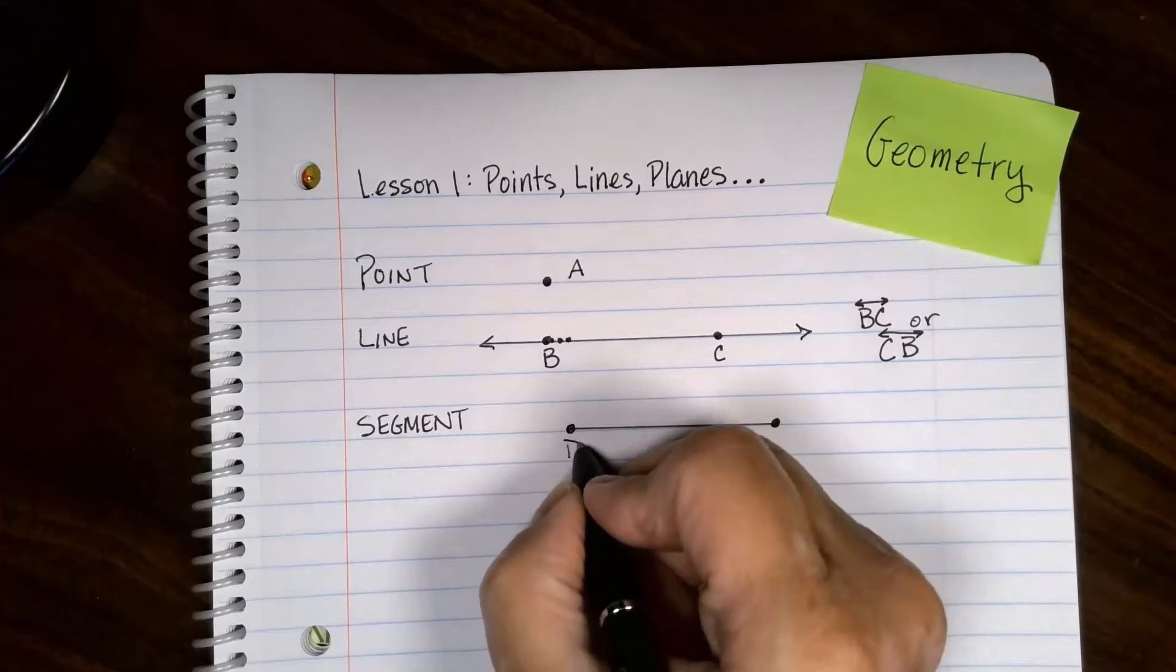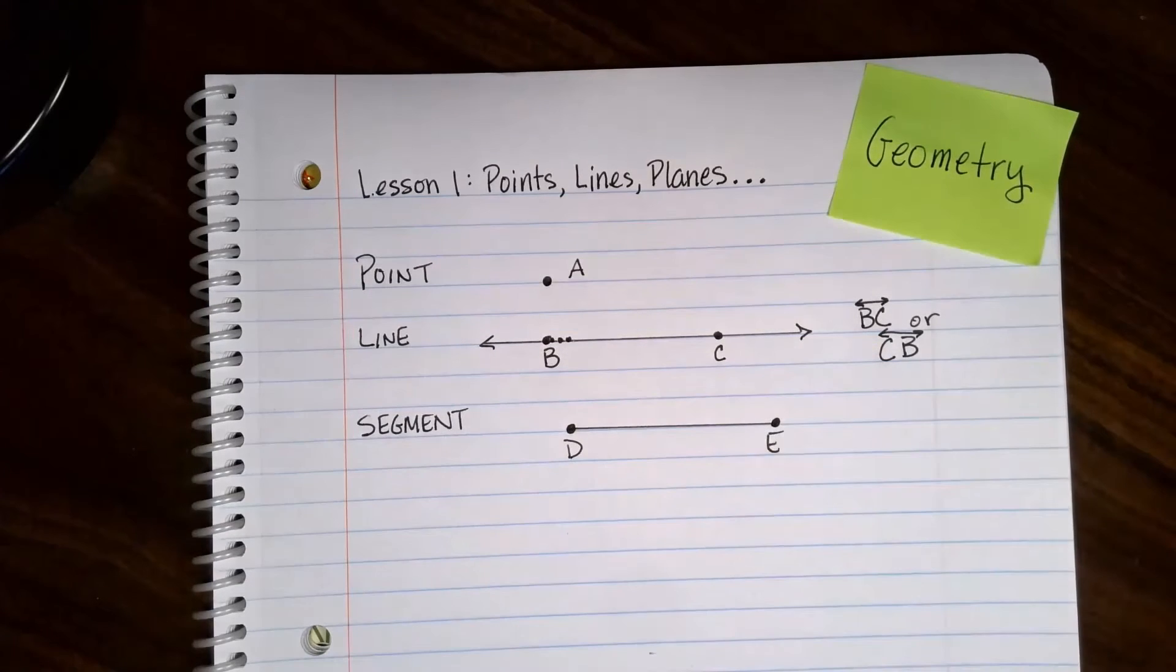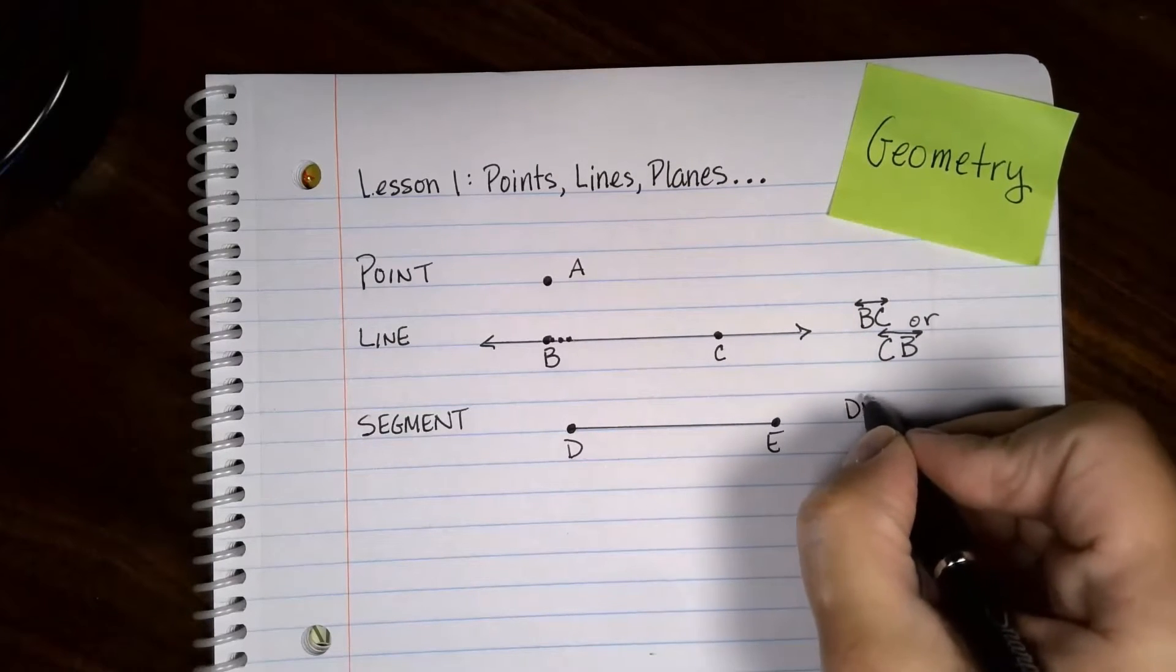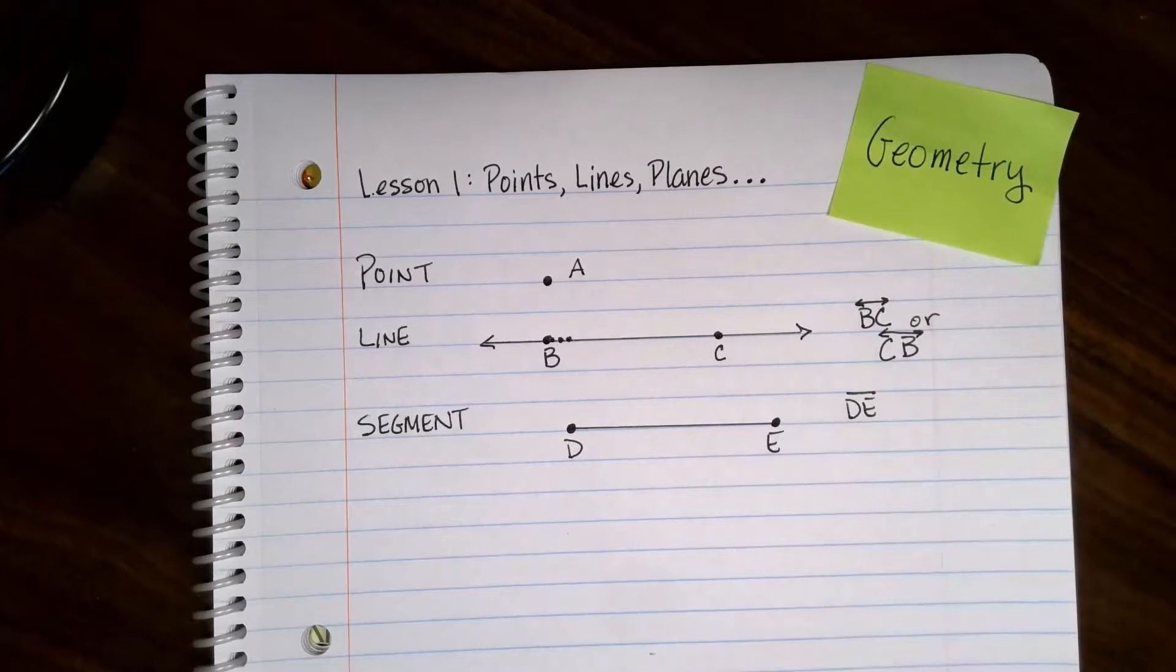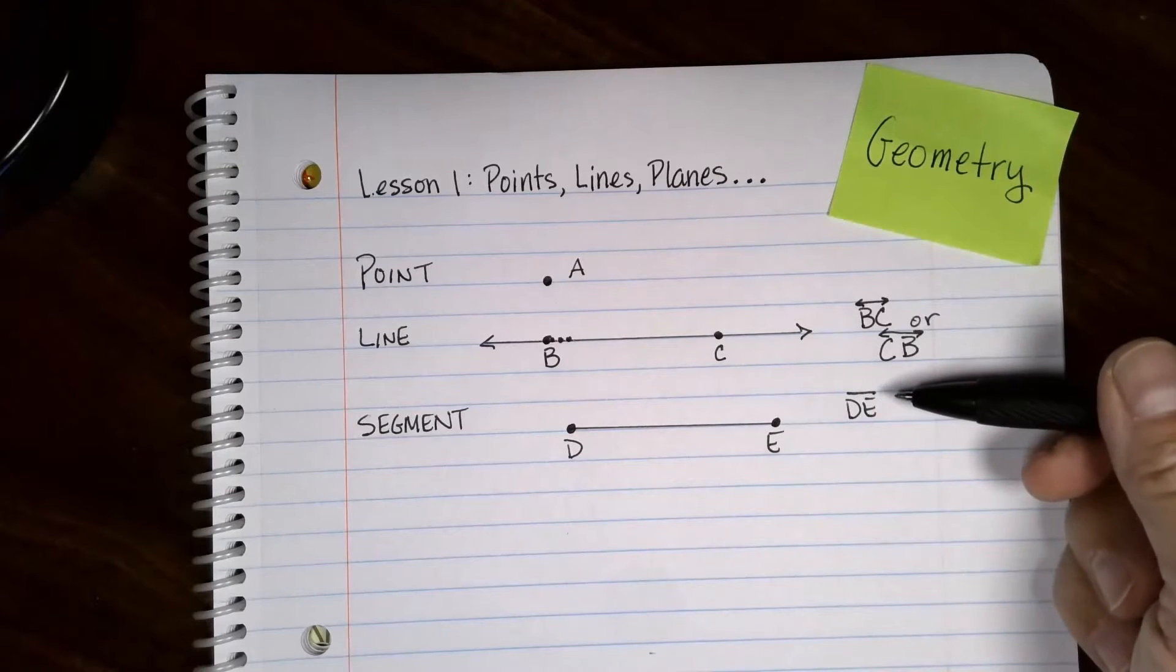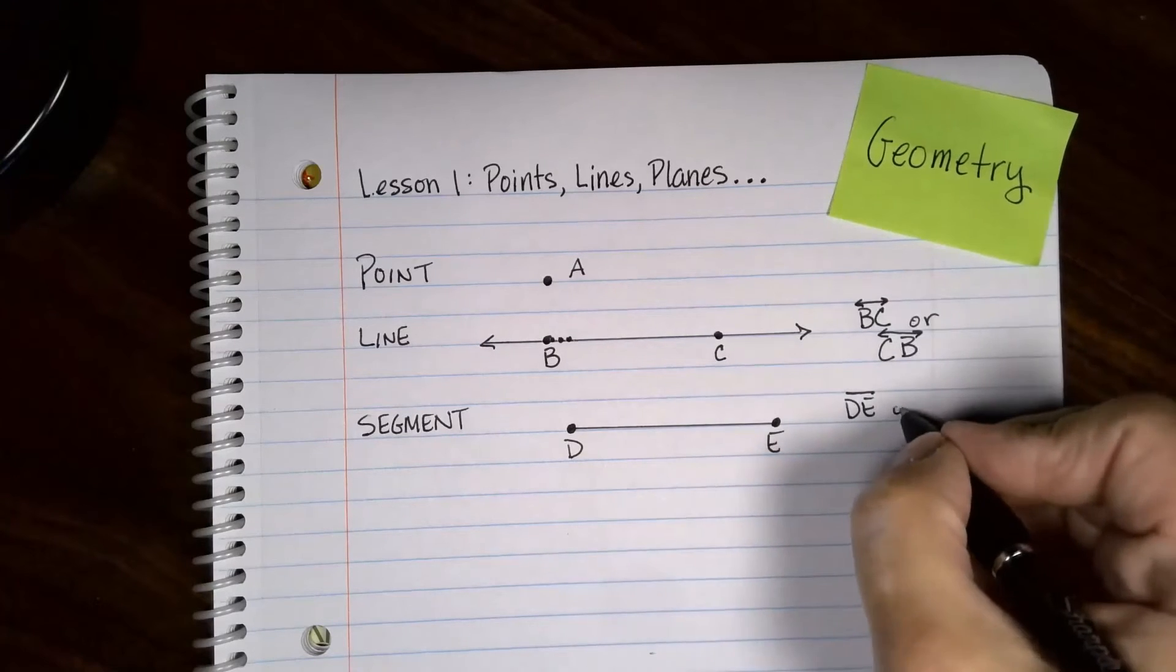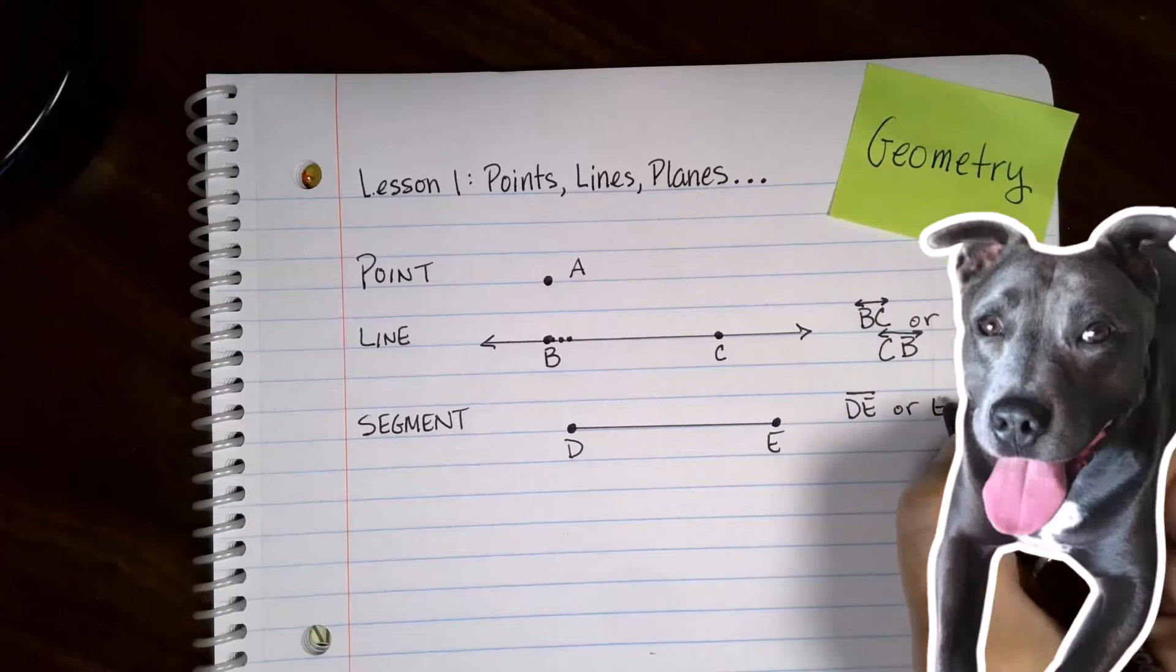I'll label this one D and that one E. Naming a line segment, you put the little icon over the top but it doesn't have arrows on both ends. This tells me when you write it down on a piece of paper that you are talking about the segment D to E, or you can flip the letters and go from E to D.